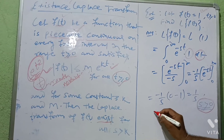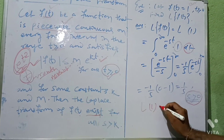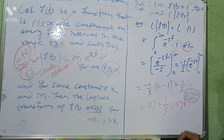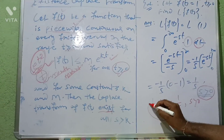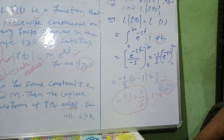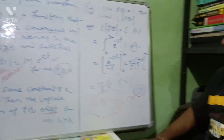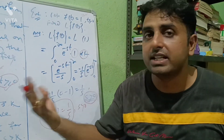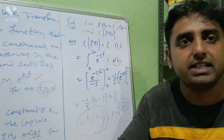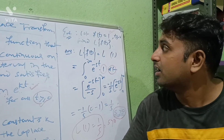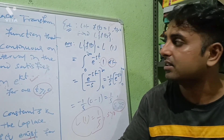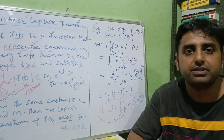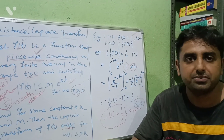So we write: Laplace of 1 = 1/s, when s > 0. We can use this result in subsequent problems. In the next video, we will solve several types of problems of Laplace transformation and discuss further topics. Thank you all.